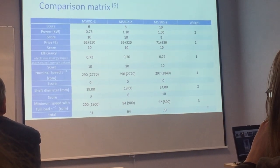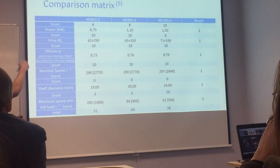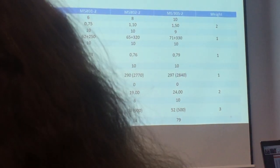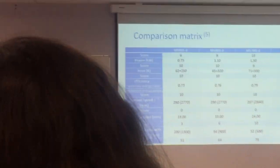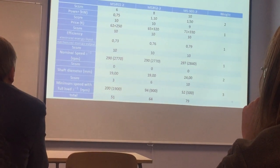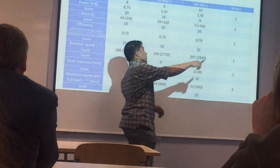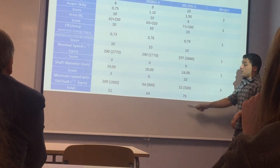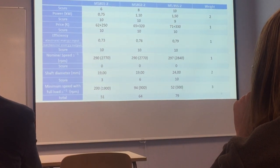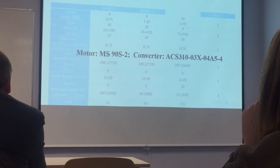We compose a comparison matrix for three different motor powers, evaluating criteria such as power, price, efficiency, nominal speed, and shaft diameter — since shaft diameters of 14 mm, 19 mm, and 24 mm affect whether we can connect directly through the coupling or need special parts. Most importantly, the minimum loading speed: for a 1.5 kW motor we achieve a minimum speed of 500 rpm, meeting the design requirements. It is not very costly, so we choose the 1.5 kW motor and the corresponding EVB drive frequency converter.